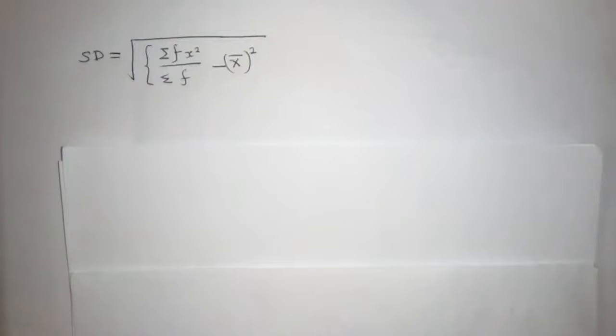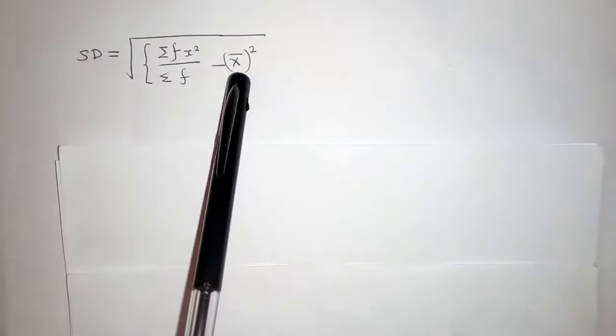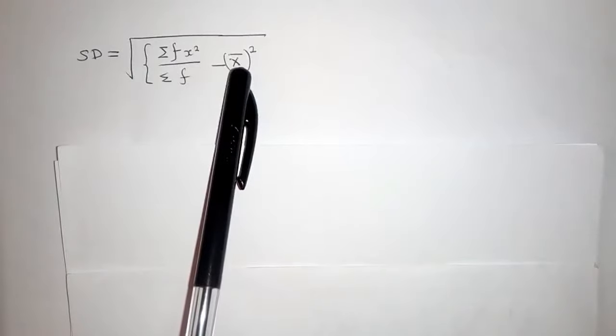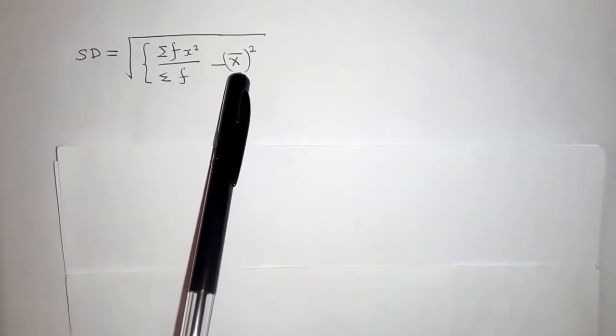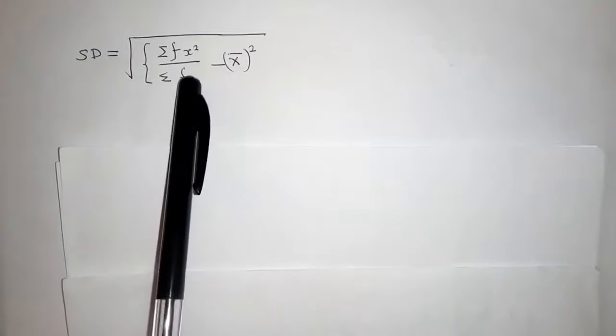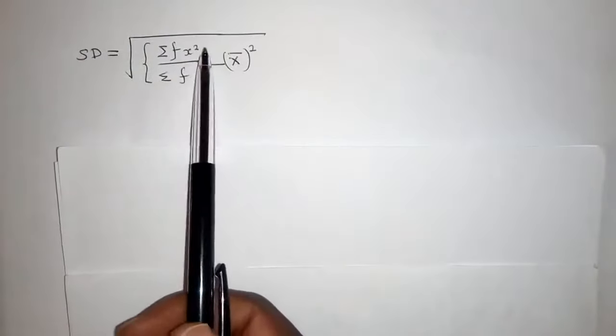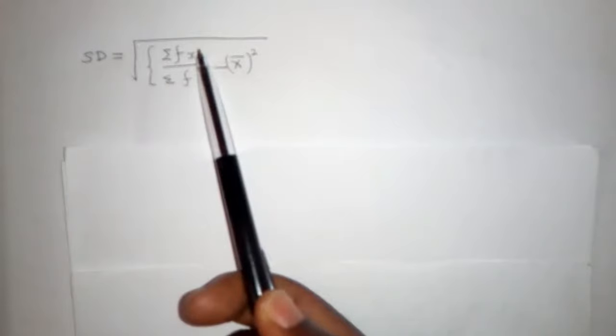Let's study the formula and check how it looks. Where it's written X bar squared, this X bar means the mean squared. The formula for finding mean looks like what is here, but you just remove this power.